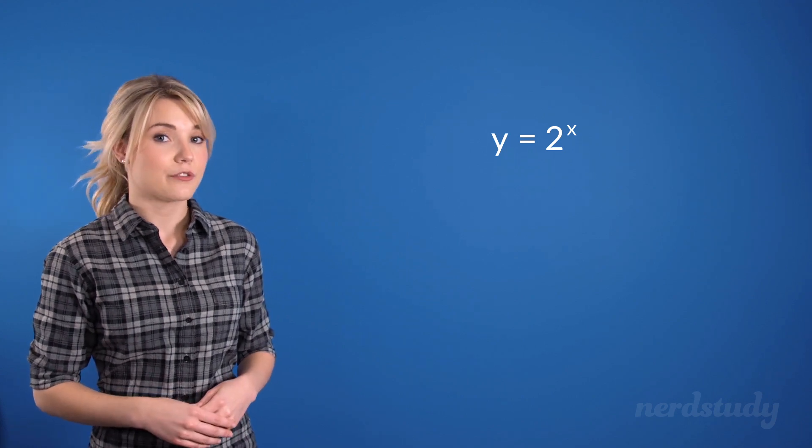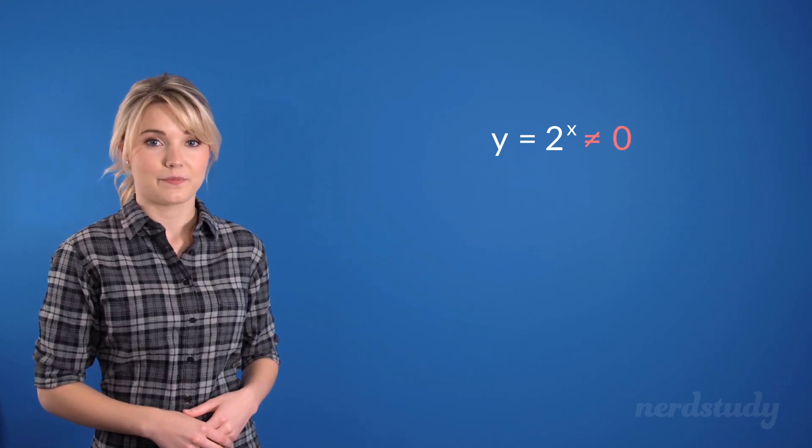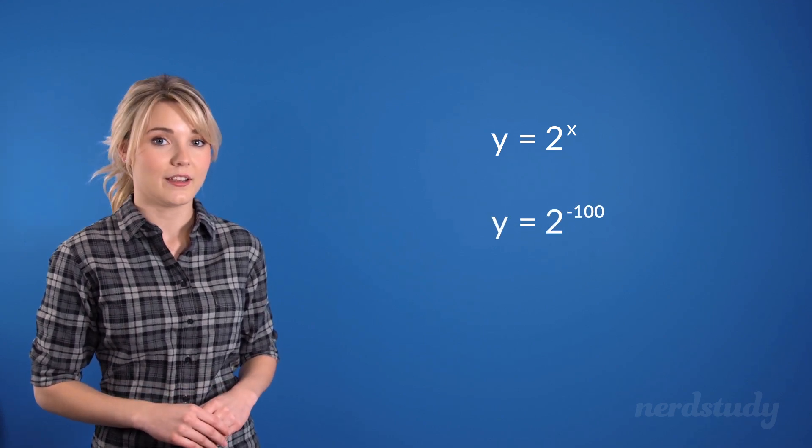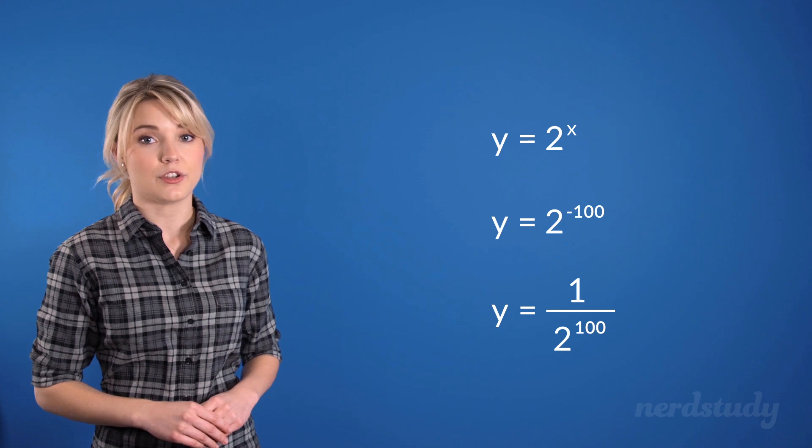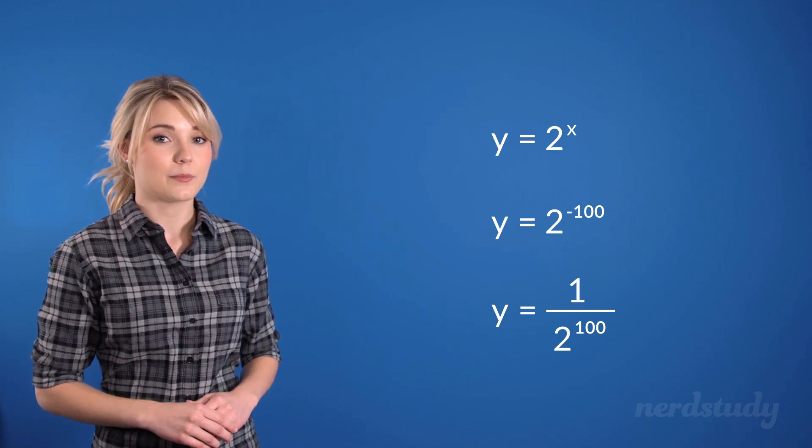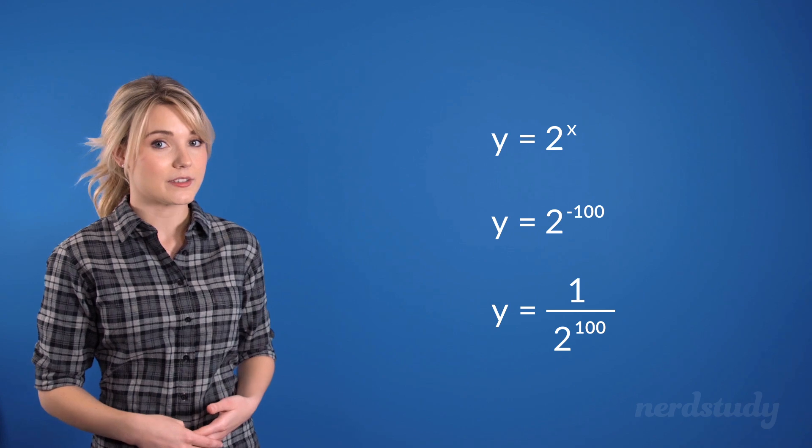However, our exponential function can never equal 0. Even if we did 2 to the exponent of negative 100, we would end up with 1 over 2 to the exponent 100, which is a very, very small number, getting very close to 0, but still never actually touching 0.